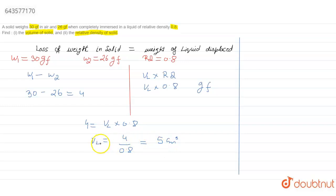Archimedes' principle also states that the volume of liquid displaced is equal to the volume of solid, because of which the liquid is displaced when it is immersed in that liquid. So we can write VL is equal to Vs, which is equal to 5 centimeter cube.